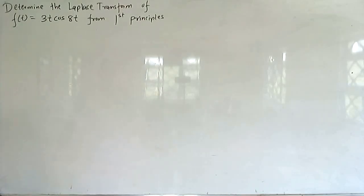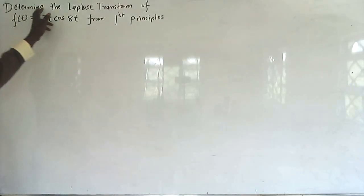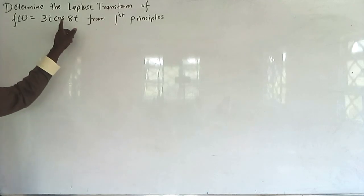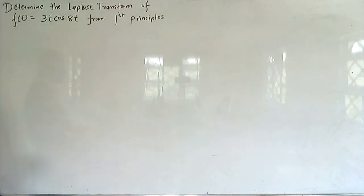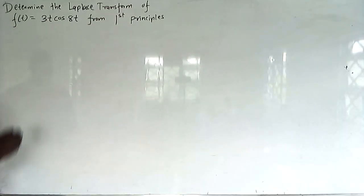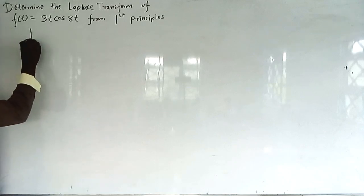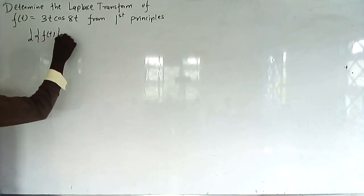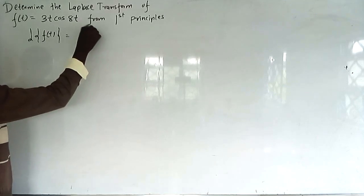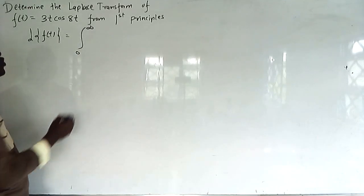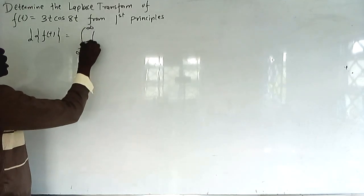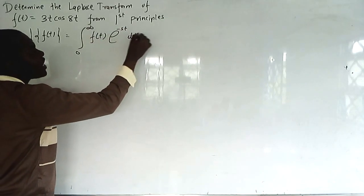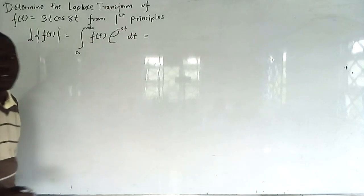We are told to determine the Laplace transform of f(t) = 3t·cosh(t) from first principle. The Laplace transform of a function f(t) from first principle is given by the integral from 0 to infinity of f(t)·e^(-st) dt.